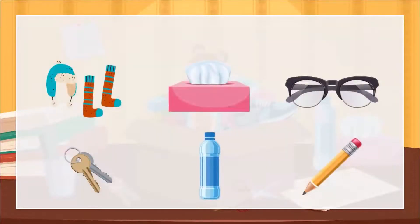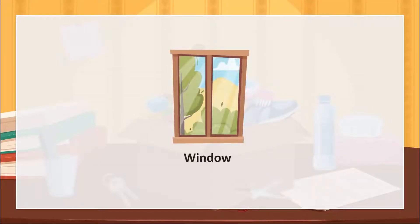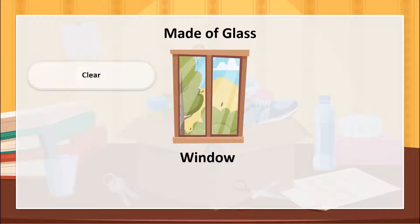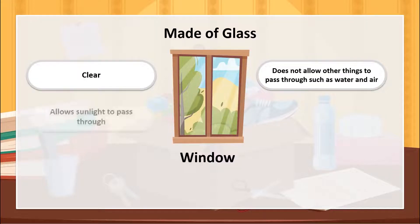Look at these materials. What is each material made of and why? The window is made of glass. Glass is clear and we can see through it. However, it doesn't allow certain things to pass through, such as water and air. It is ideal for protecting us from the rain and cold winds, but it does allow light to pass through, such as sunlight.